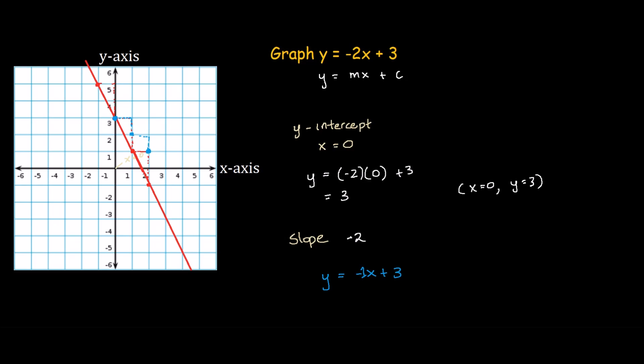If you join this line together, you would have something like this. As you can see, the blue line has a slope of -1, and the red line has a slope of -2. You can say the red line is steeper than the blue line because it has a slope of -2.